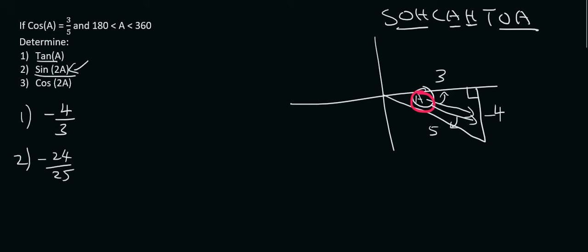Now cos 2A is the same, remember that 2A is not just, it's not going to be the same as cos A times by 2. So you can't just work out cos A and then just say times 2. I've seen a lot of students do this.